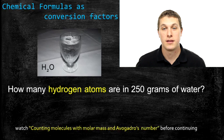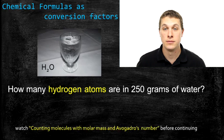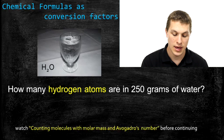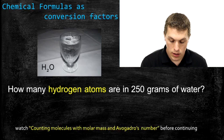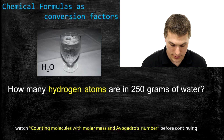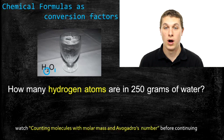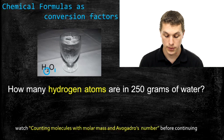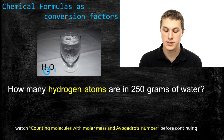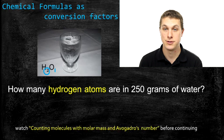In this episode of Real Chemistry, we're going to talk about using chemical formulas as conversion factors. In doing that, we'll be able to answer questions like how many atoms of hydrogen are in 250 grams of water? If we look closer at the chemical formula for water, it tells us that there are two hydrogens and one oxygen for every one molecule of water. That allows us to use this as a conversion factor between number of molecules of water and number of atoms of hydrogen.